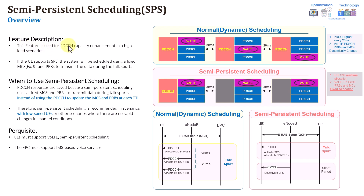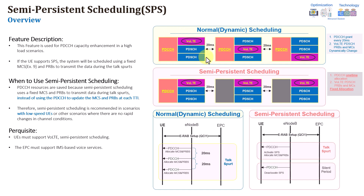The first feature we're going to start with today is semi-persistent scheduling. This is a very simple feature which is mainly used to reduce PDCCH congestion — to have PDCCH capacity enhancement in general, and particularly to use in high load scenarios. Let's first try to recall what normal scheduling in VoLTE looks like. VoLTE packets are transmitted every 20 milliseconds.